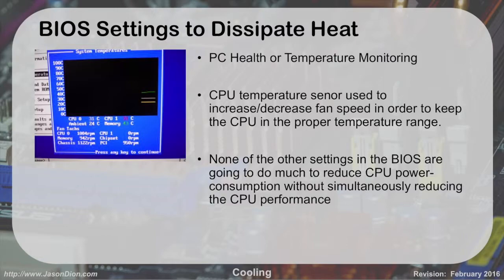Your BIOS can actually be set up to help dissipate some heat. A lot of BIOSes have what's called PC health or temperature monitoring. When we did our BIOS lab, we were able to see how hot our CPUs were running. There's a sensor that if it gets too hot, it will start spinning the fan up faster. Most of our CPU fans were running around 3,600 RPM. Sarah's was going up into the 4,000–5,000s because her CPU was hotter. The case fan was the same way — most of ours were operating around 750 RPM, while Sarah's machine was overheating and trying to go at 1,000 RPM.